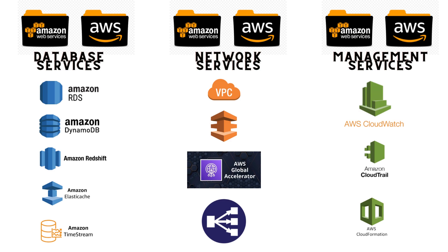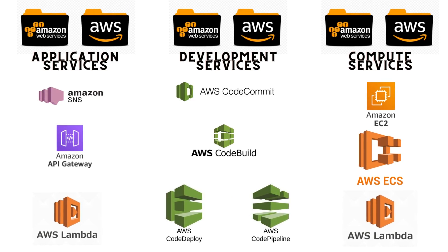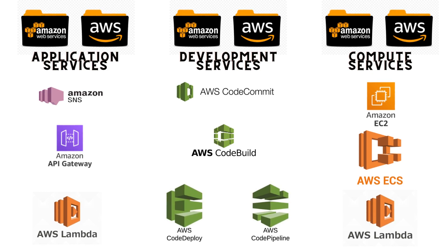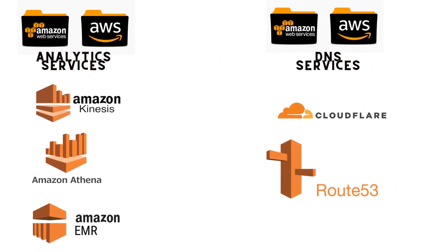For management services, we have AWS CloudFormation, AWS CloudWatch, and AWS CloudTrail. Application services include Lambda, Amazon API Gateway, and Amazon SNS. Development services include CodeCommit, CodeBuild, and CodeDeploy. Compute services include EC2, ECS, and Lambda. Analytics services include EMR, Athena, and Kinesis. DNS services include CloudFront and Route 53.